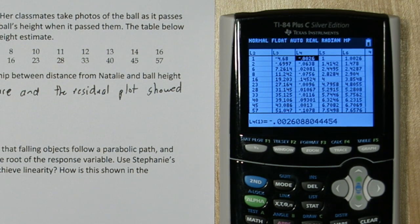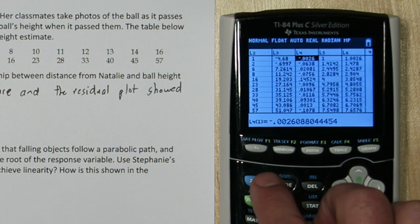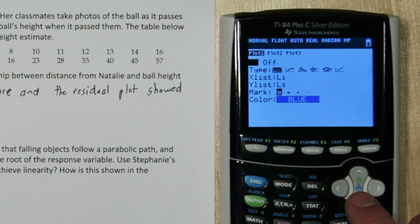Alright, here's our new residuals. So our new residual plot is going to be list 1 for our explanatory variable, and list 4 for our residuals.